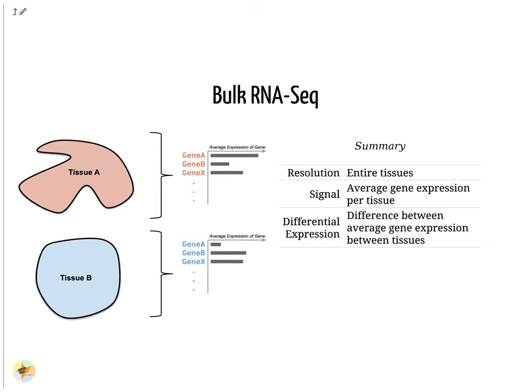With bulk RNA-seq we compare two tissues by looking at the average expression of each gene detected across each of the tissues. Due to the number of RNA molecules being considered, the sequencing depth and the strength of the analysis is reasonably high. The differential expression is then measured as the relative expression of a given gene between one tissue and another.